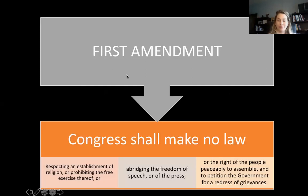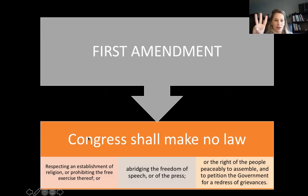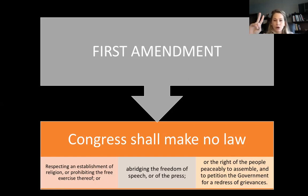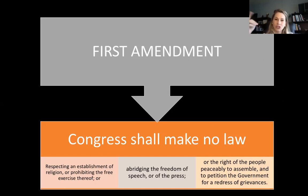The First Amendment consists of three things. First, it addresses religion. Second, your ability to say what you want and write what you want. And third, your right to essentially protest. Religion, speech, protest — R, S, P. That's a good way to remember what the First Amendment contains.